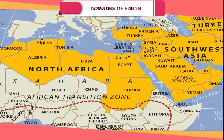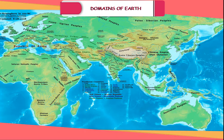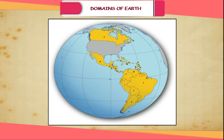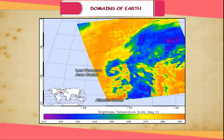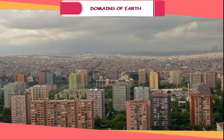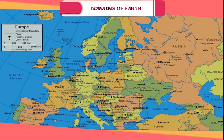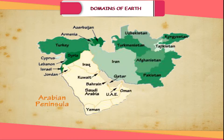Europe. This continent lies to the west of Asia and is much smaller than Asia. It lies entirely in the northern hemisphere but extends into both the eastern and the western hemispheres. The Arctic Circle passes through it. On three sides, it is surrounded by the Atlantic Ocean, the Mediterranean Sea and the North Sea. Europe is a densely populated continent. No other continent has left its impact on the other continents of the world as Europe has done in the past four centuries. Europe is sometimes called the peninsula of Asia.